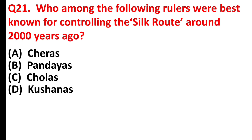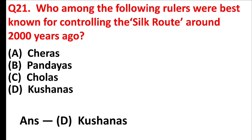Who among the following rulers are best known for controlling the silk route around 2000 years ago? Answer is option D: Kushanas.